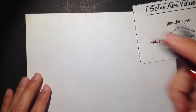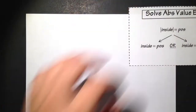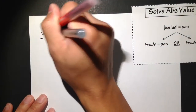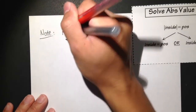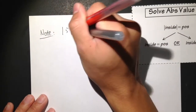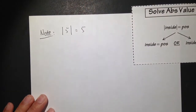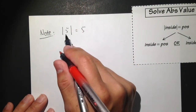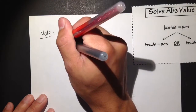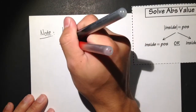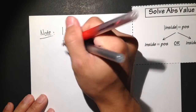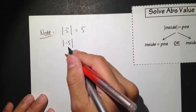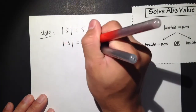For a quick example, notice that if we have the absolute value of 5, we end up with just 5. The absolute value doesn't do anything to a positive number. But if you have an absolute value of negative 5 inside, then the absolute value of negative 5 is also equal to 5.